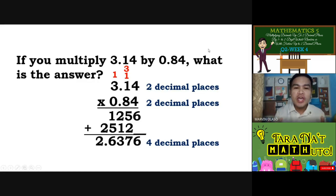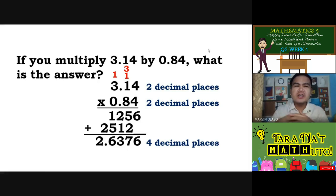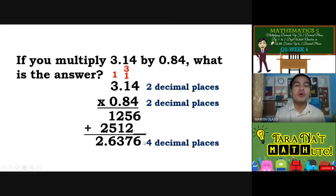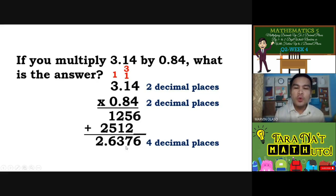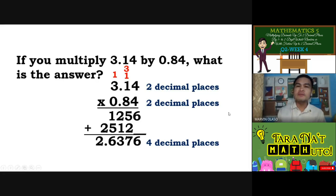So we have 2 and 6,376 ten-thousandths. When placing the decimal point, start from the right digit going to the left. Then check — do you have 4 decimal places? That is how we do it.